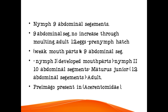Nymph stage has 9 abdominal segments with no increase through molting. Adult has 12 abdominal segments. Eggs are laid by the adult, from which a pre-nymph hatches, having weak mouthparts and 9 abdominal segments. This gives rise to Nymph 1 with developed mouthparts, then Nymph 2 with 10 abdominal segments, which gives rise to maturus junior having 12 abdominal segments. The adult emerges from the maturus junior stage.